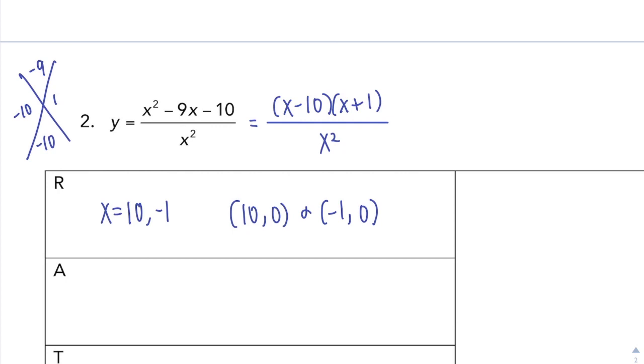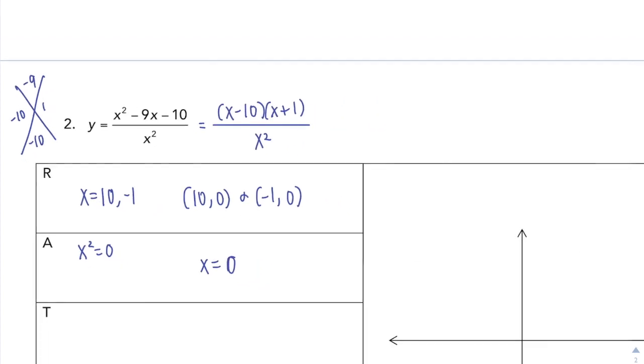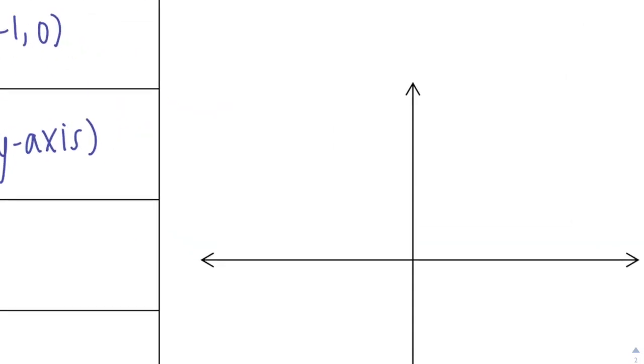Asymptotes, set the denominator equal to 0. So if I square root that, I'm going to have an asymptote at x equals 0, which is just your y-axis. So I know I'm going to have one right here.